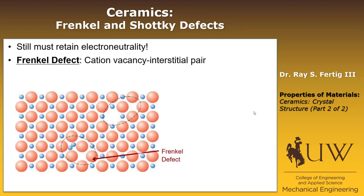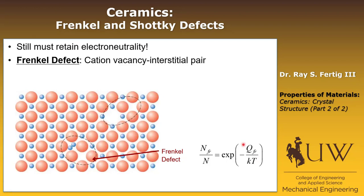This requirement for electroneutrality gives rise to two classes of point defects in ceramics. The first is called a Frenkel defect — it's a cation vacancy–interstitial pair. We create a cation vacancy and place that cation in an interstitial site elsewhere. Effectively, we removed a positive charge and added a positive charge back in, so the net charge change is zero and electroneutrality is retained. There's an equilibrium concentration of Frenkel defects, computed with the same form as vacancy concentration in metals, but using the Frenkel defect formation energy.